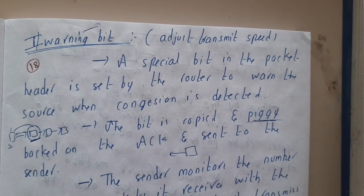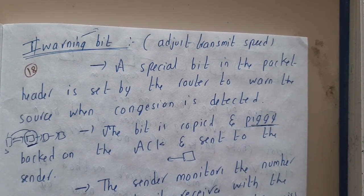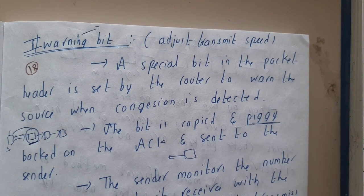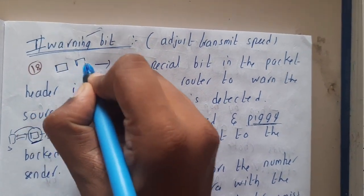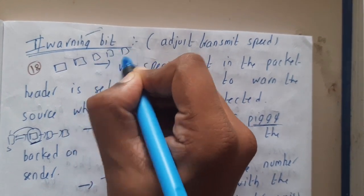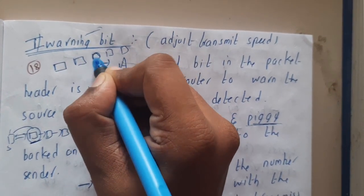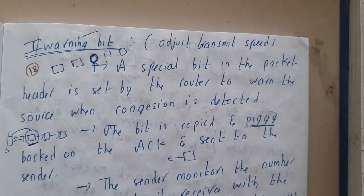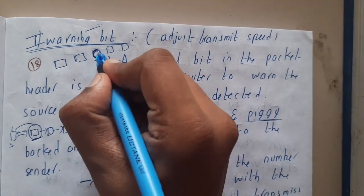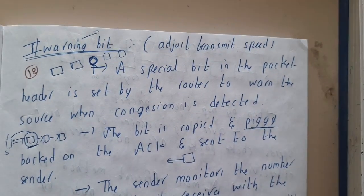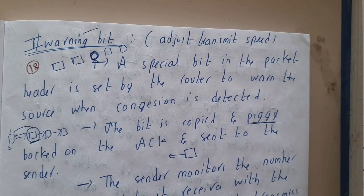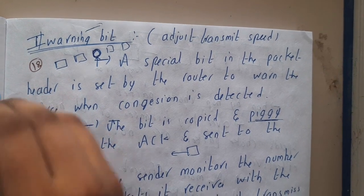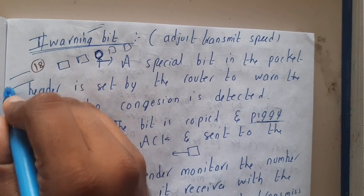In this lecture, let us go through the warning bit. Basically, when we'll be using the warning bit — assume there are multiple routers and congestion has occurred. If congestion occurs, the best option is to inform the sender to slow down his transmission. If he slows down, the traffic will keep decreasing and the route will clear.